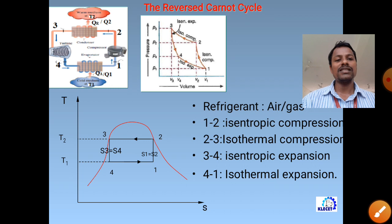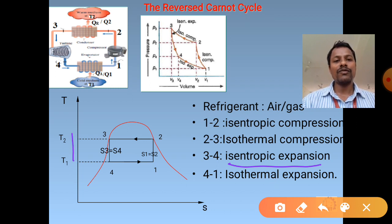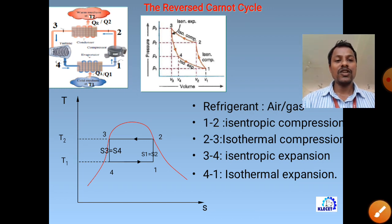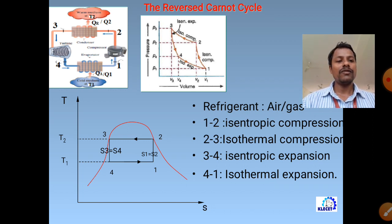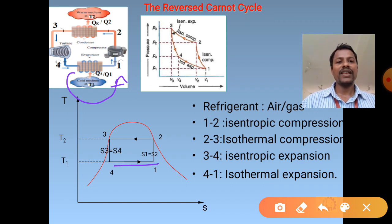The working fluid used is air or gas. Process 1→2 is isentropic compression (reversible adiabatic - no heat transfer from compressor body, no losses, 100% efficiency). Process 2→3 is isothermal compression: compression at constant temperature inside the condenser, where heat is rejected at constant temperature.